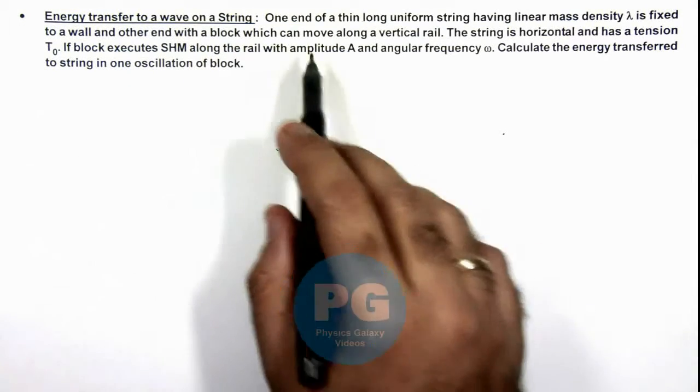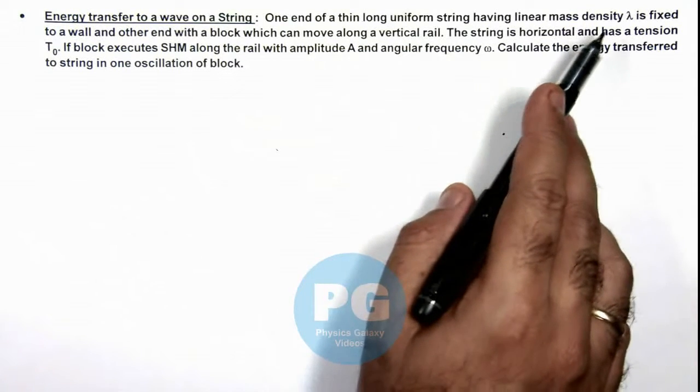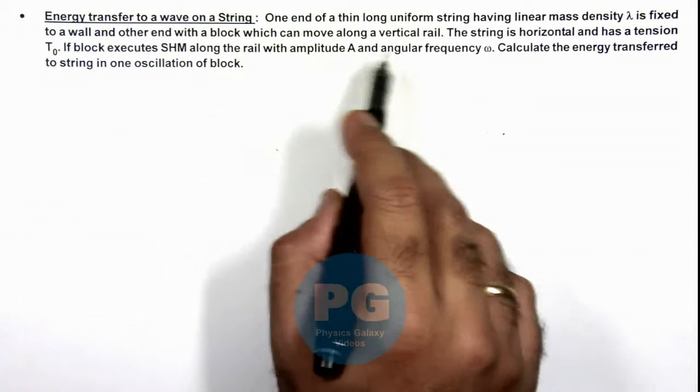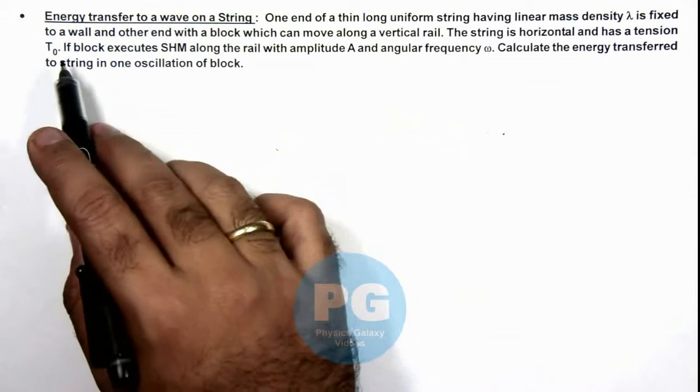We are given that one end of a thin long uniform string having linear mass density lambda is fixed to a wall and other end with a block which can move along a vertical rail. The string is horizontal and has a tension T₀.